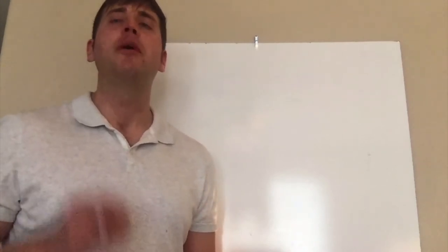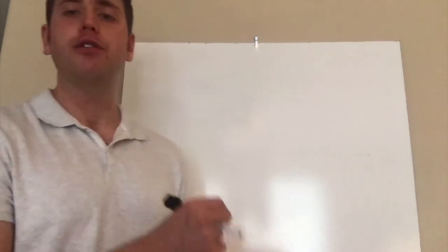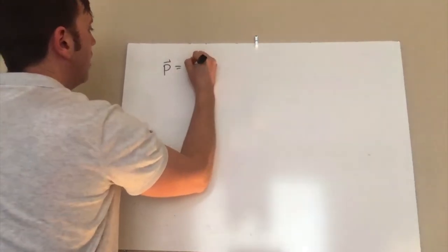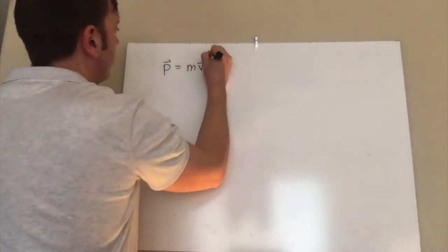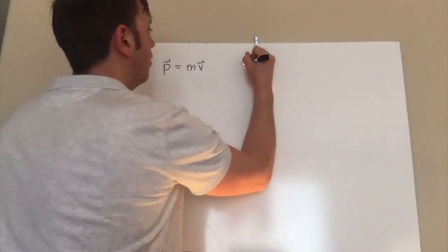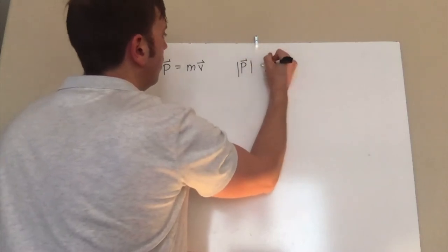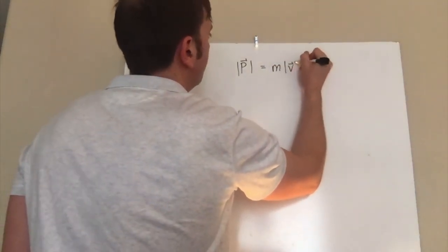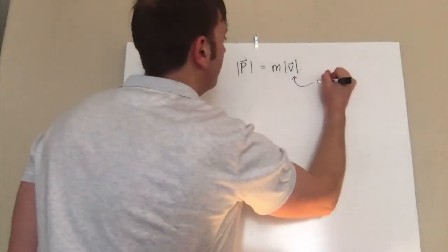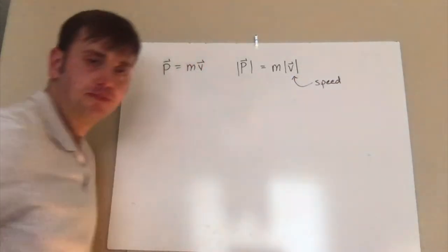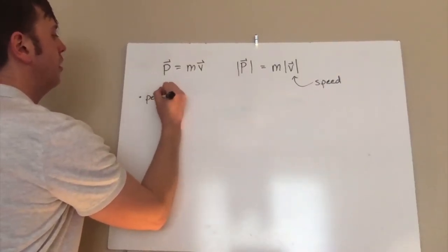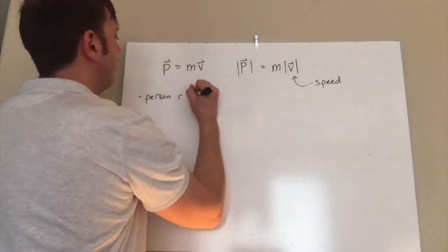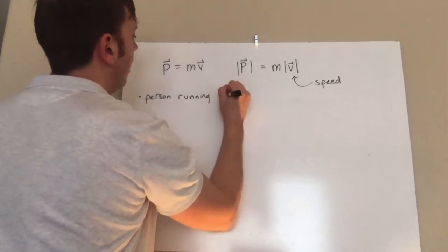We're going to estimate the momentum of some everyday objects. The first is a person running at full speed. The definition of momentum is P equals M times V — momentum equals mass times velocity. If we want the magnitude of an object's momentum, that's simply the mass times the speed. So we need to think about what the mass and the speed of each object is.